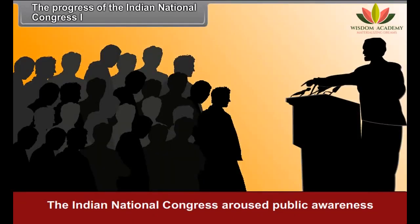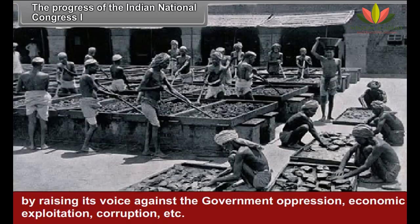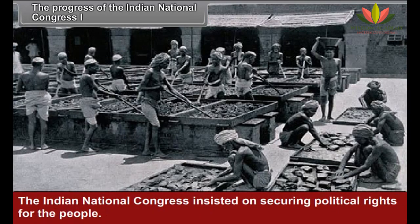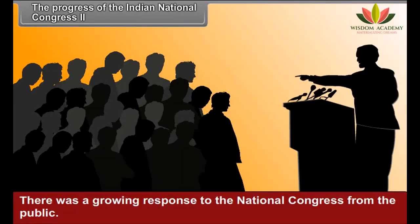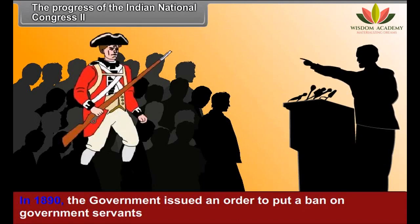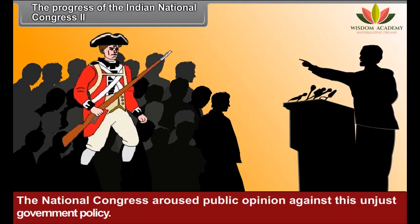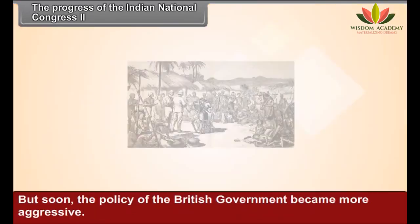The Indian National Congress aroused public awareness by raising its voice against government oppression, economic exploitation, corruption, and similar issues, and insisted on securing political rights for the people. Dadabhai Naoroji brought India's problems to the notice of the public in England. There was a growing response to the National Congress from the public. In 1890, the government issued an order to ban government servants from attending the sessions of the National Congress. The National Congress aroused public opinion against this unjust policy, which forced the British government to withdraw the order.